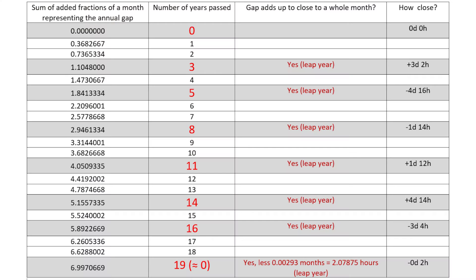When we did the calculations in a previous video, we saw that the leap years were in the 3rd, the 5th, the 8th, the 11th, the 14th, the 16th, and the 19th years.